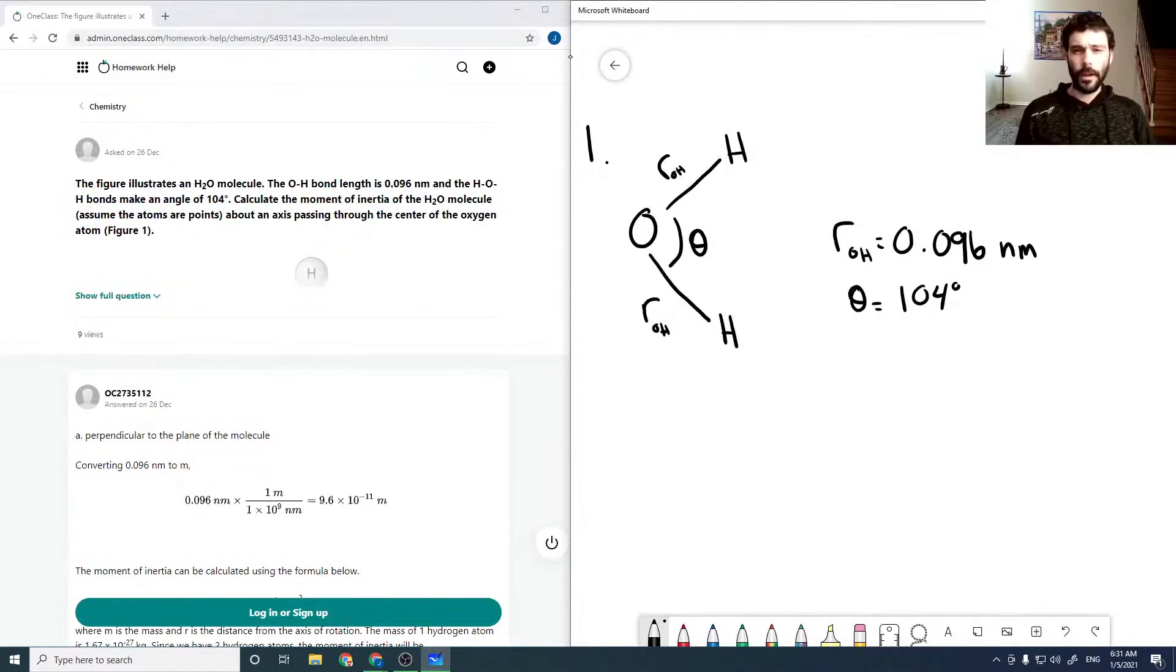And so it wants us to calculate the moment of inertia of the H2O molecule about an axis that passes through the center of the oxygen atom. And it wants us to calculate it first through an axis that I've shown here, where it just goes straight through and is perpendicular to the molecule. And that's A. And B is an axis which passes through and bisects the bond.